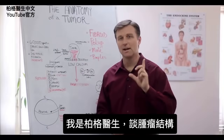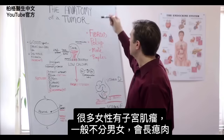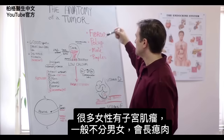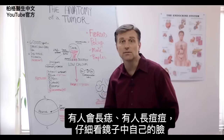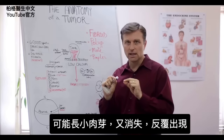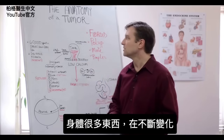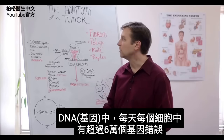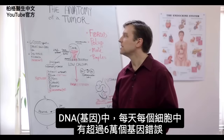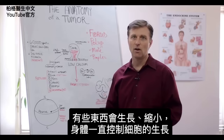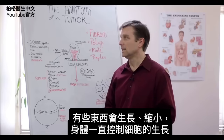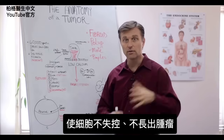Hey, this is Dr. Berg again. In this video, we're going to talk about the anatomy of a tumor. A lot of women are getting fibroids, and the general population — men and women — are getting polyps. Some people get moles, some people get pimples. You have over 60,000 genetic errors in your DNA every single cell, every single day. Your body is constantly keeping these cells in check, controlling cellular growth so it doesn't get out of control and create tumors.